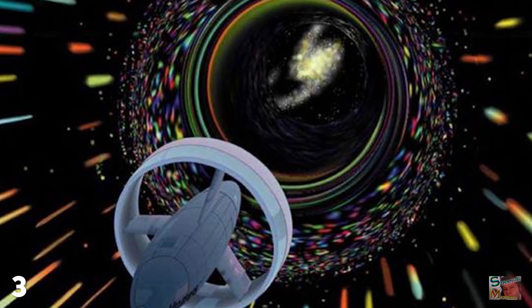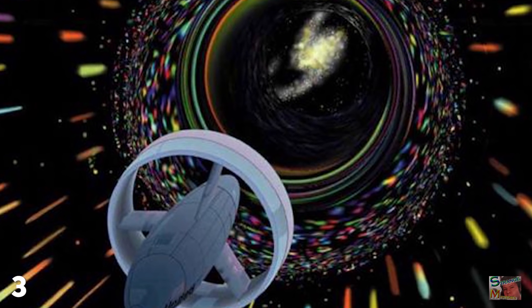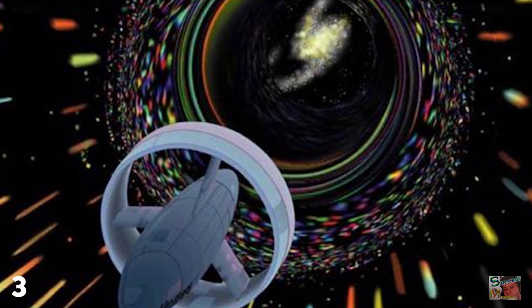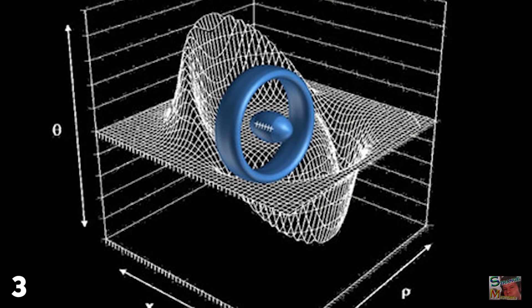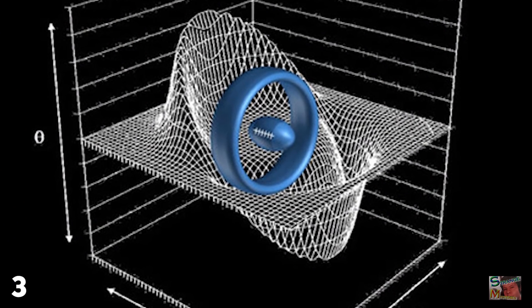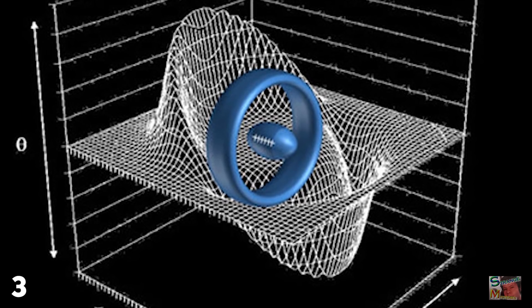His concept involves the contraction of space in front of the vehicle, followed by the expansion of space behind it, allowing the vehicle to exist within a warp bubble as it bends space-time to its whim.